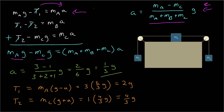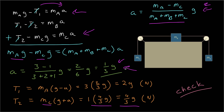Finally, for tension 2, I use the equation for mass c: t2 equals mass c times (g plus a). Since a is one-third g, g plus a is four-thirds g, giving t2 equals mass c times four-thirds g in newtons. As a final check: the acceleration is less than g, which makes sense, and the tensions are reasonable positive values — not excessively large or negative — giving confidence in these answers.